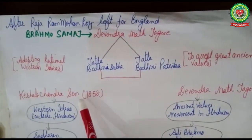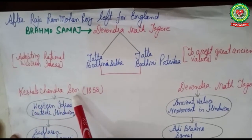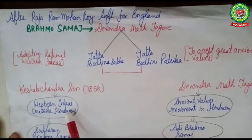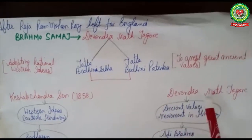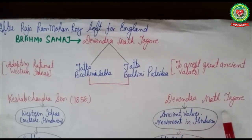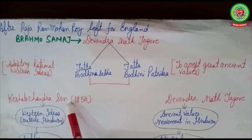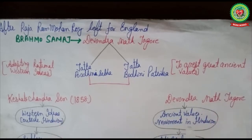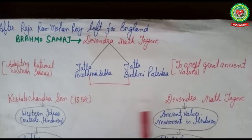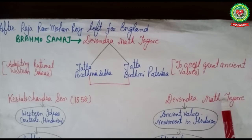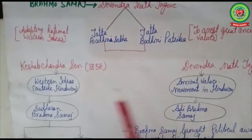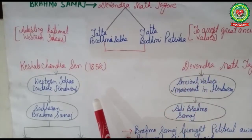Brahmo Samaj gained one more prominent figure, Keshab Chandra Sen, who joined the association in 1858 and served it for a long time. Keshab Chandra Sen was more inclined towards western ideas, whereas Debendranath Tagore was more inclined towards ancient values. Sen believed Brahmo Samaj was a movement outside Hinduism based on western ideas, while Tagore believed it was a movement to revive Hinduism from within — creating a controversy between the two.